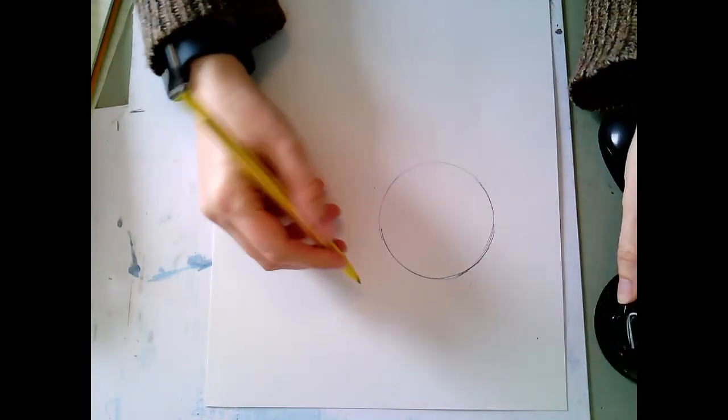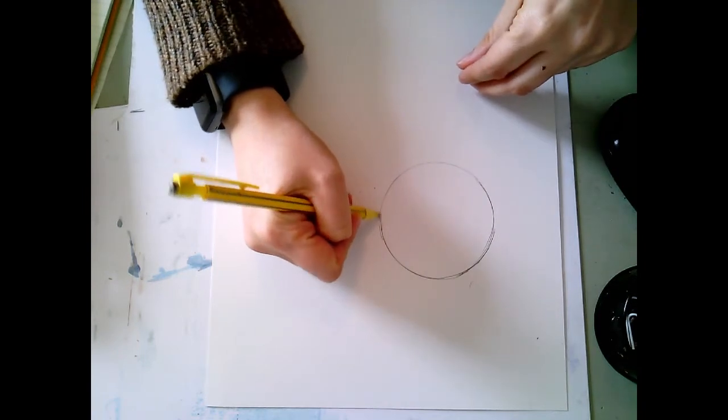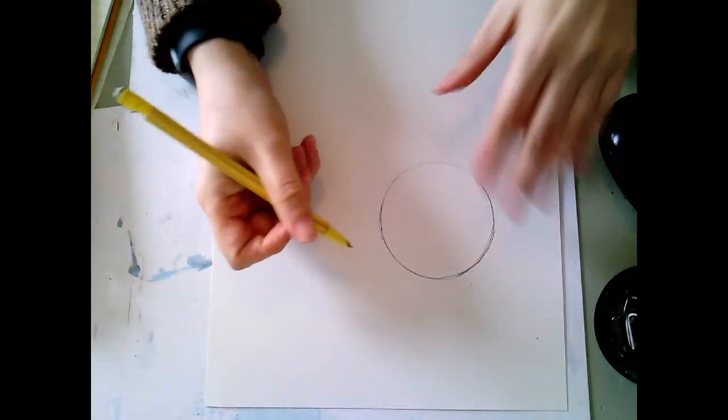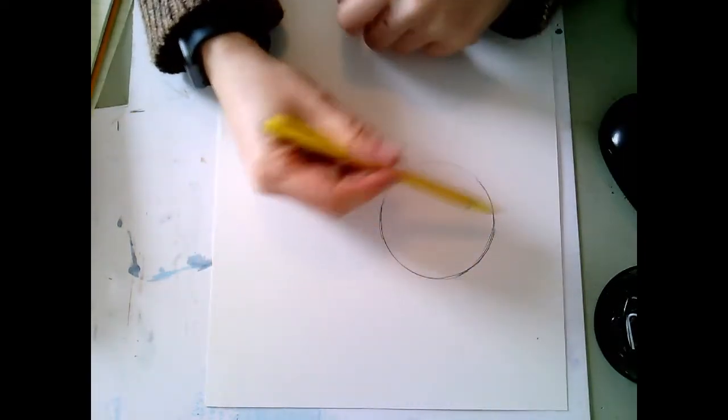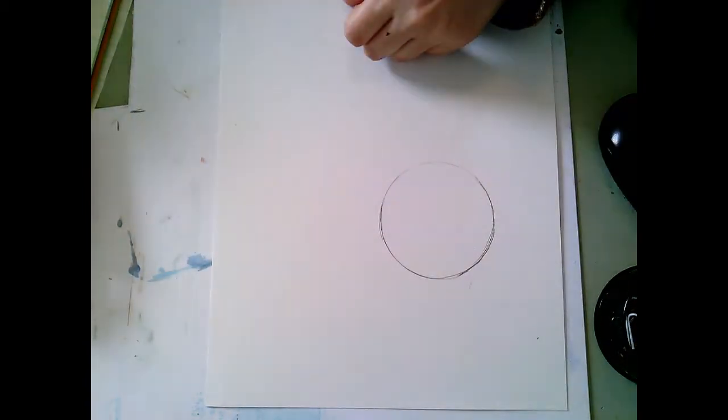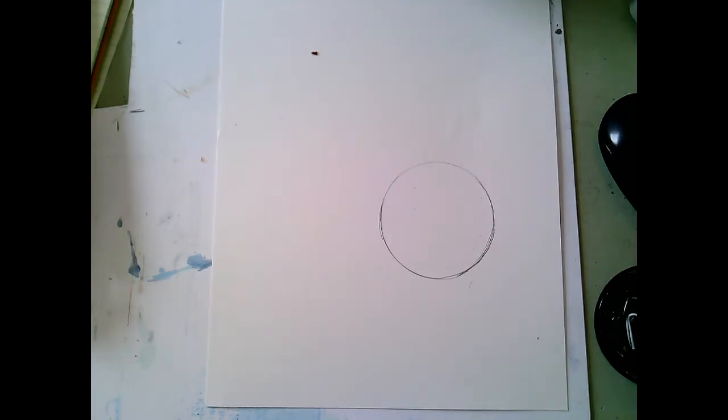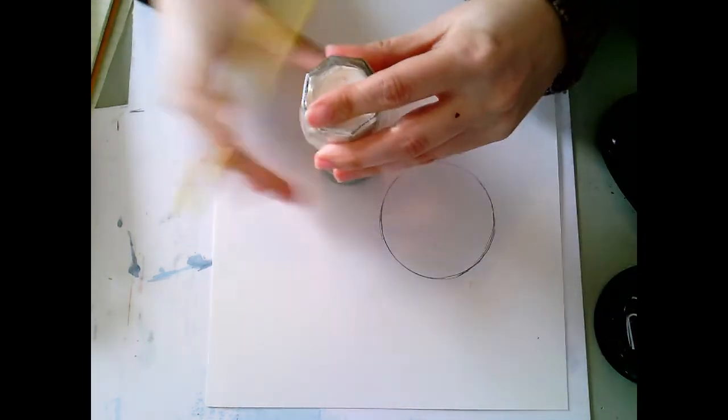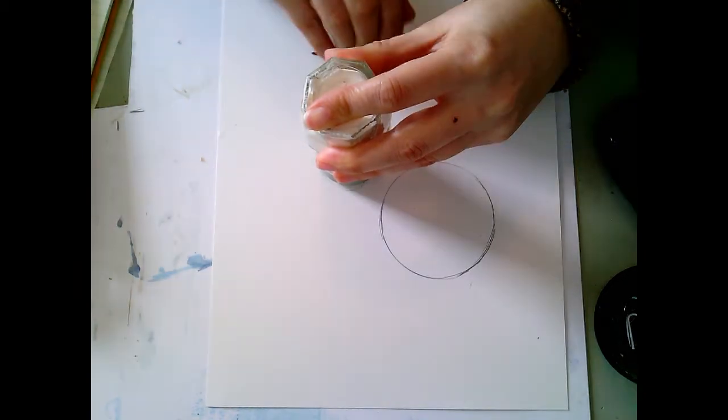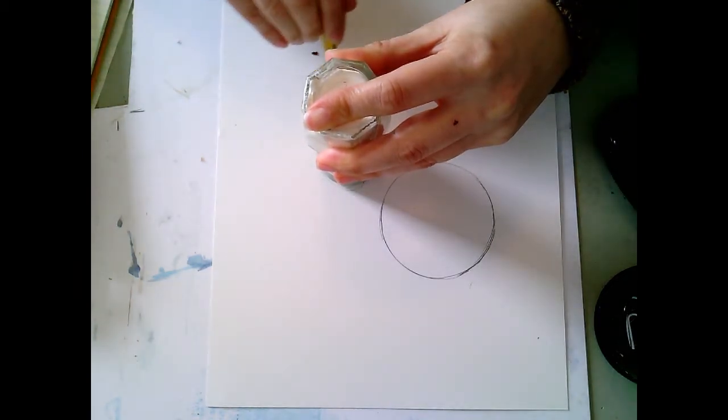And I mean I'm not really worried about this not being perfect. I'll go back in and I'll fix these. Maybe I'll make this ball like hairy or something so that it doesn't really matter that the circle itself isn't perfect. And so I'm just gonna do this with a whole bunch of different objects and get a bunch of different sized circles.